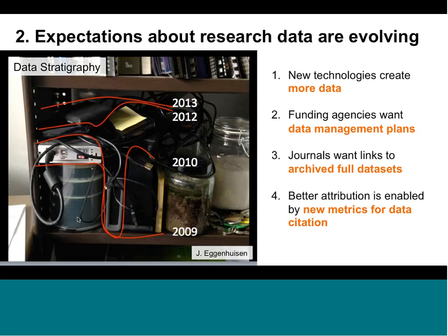Newer technologies like high-resolution video are creating very large volumes of data that experimentalists need to deal with. Funding agencies are now asking for data management plans. Journals want to link to full archived datasets, not just a representative subset. And there's now better attribution enabled by new metrics for data citation — all of these things are changing pretty quickly.